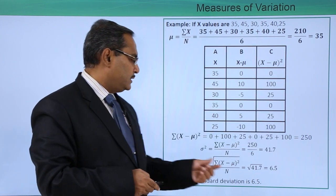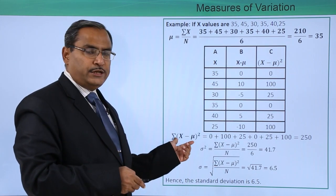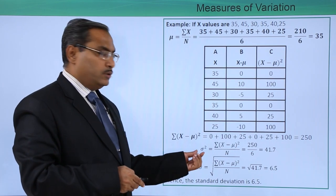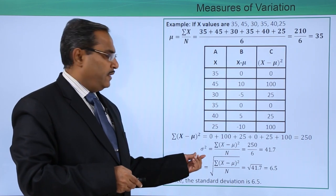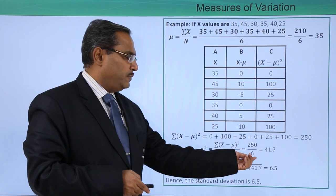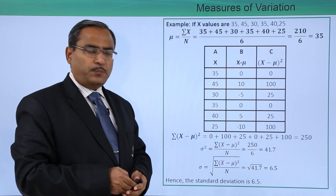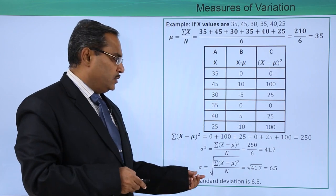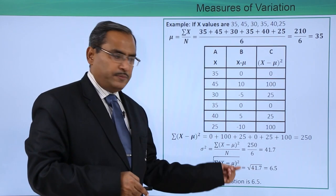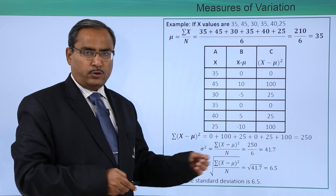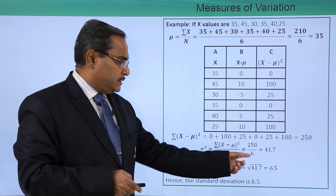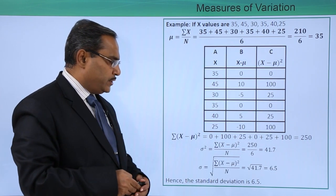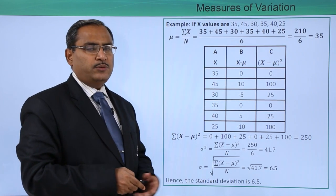Taking the respective squares and summing them gives 250. So the variance is 250 divided by 6, which equals 41.7. To find the standard deviation, we take the square root of 41.7, which gives approximately 6.5. Hence the standard deviation is 6.5.